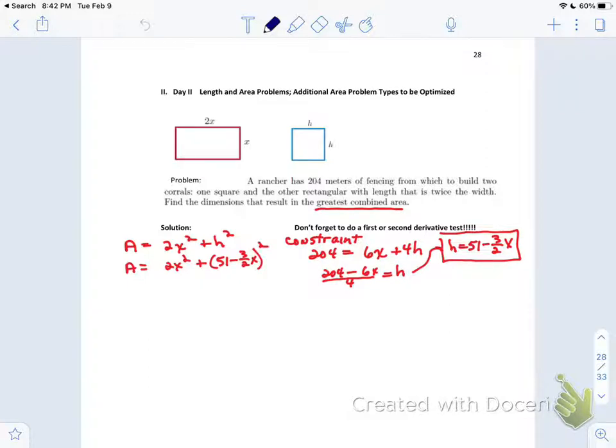So my area now equals 2x squared plus (51 minus 3 halves x) the quantity squared. Take your derivative. So my derivative is going to be A prime equals 4x, and then plus, do the power rule, 2 times (51 minus 3 halves x) to the first, don't forget the chain rule, times negative 3 halves.